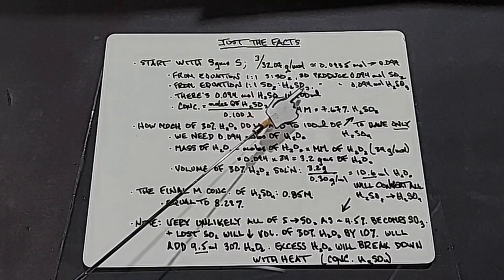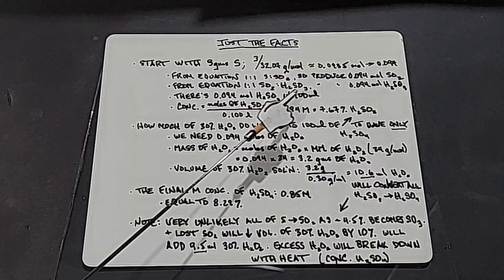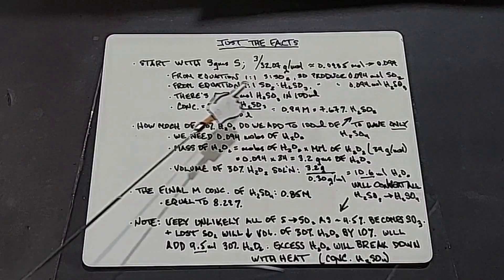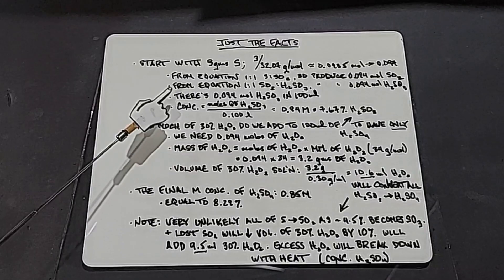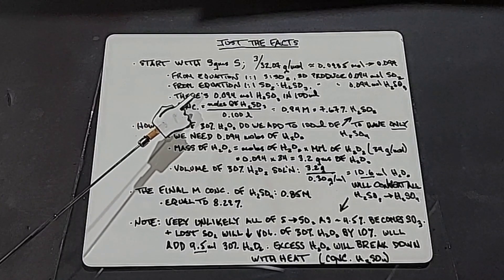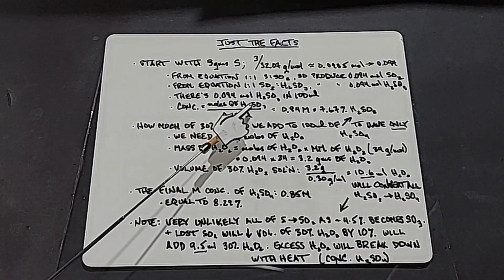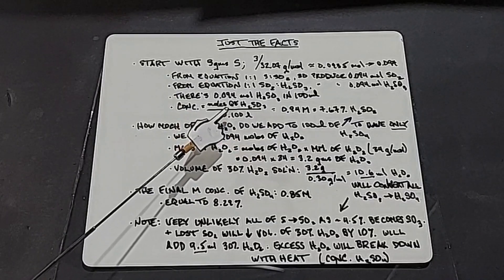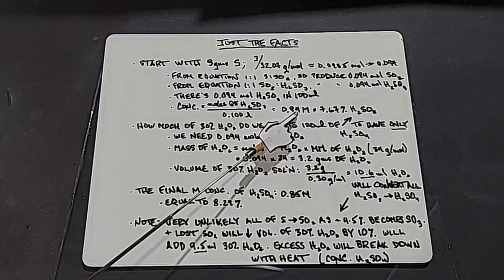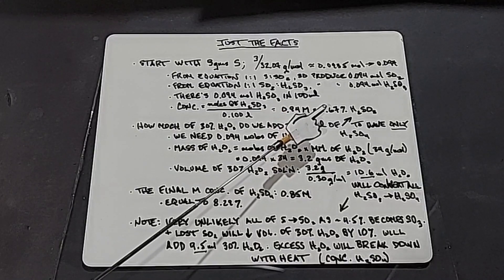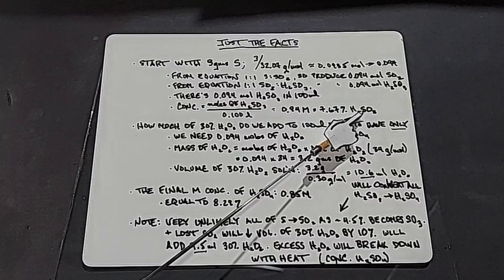Since we're using 100 mL, we figure out the molar concentration using a full liter: taking the moles of H₂SO₃ divided by 0.1 (which is 100 mL) gives us 0.94 moles per liter, and converting that to percentage gives approximately 7.67% sulfurous acid in the end.